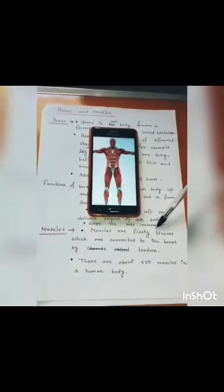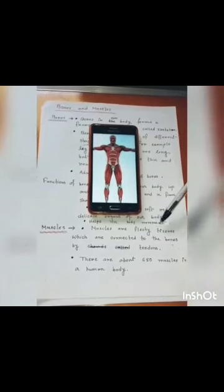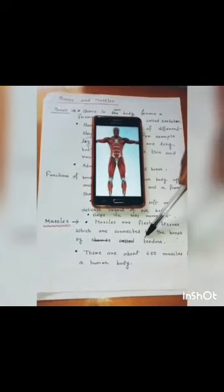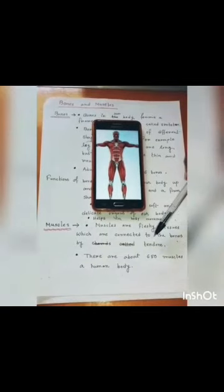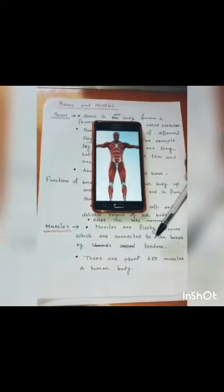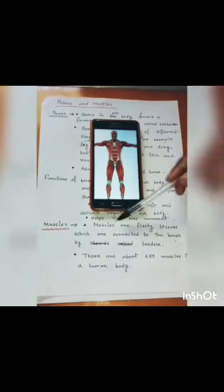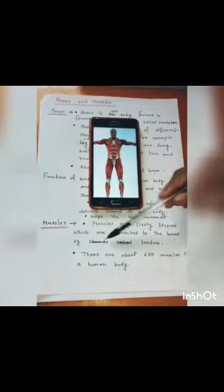This fleshy structure are our muscles. Muscles are fleshy tissues which are connected to the bones by tendons. What are tissues? Tissues are mass of cells that form our body. They are mass of cells. And what are tendons? Tendons are cord-like structure which are very strong and thin. They join the muscles to the bones. So what are muscles? Muscles are fleshy tissues which are connected to the bones by tendons.